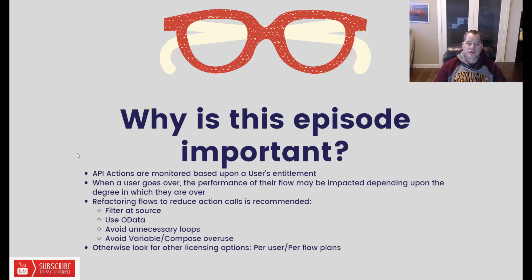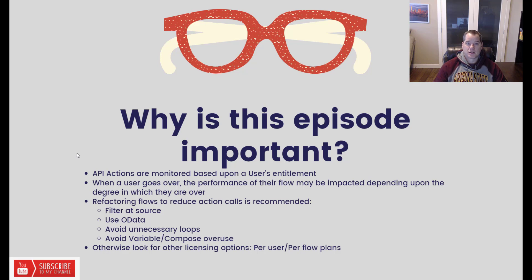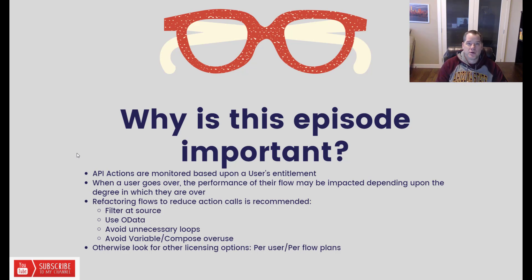The product group notes that when a user goes over their entitlement, the performance of their flow may be impacted depending on the degree. If you're just marginally over, you wouldn't expect much impact. But if you're dramatically over your entitlement, that's when you can expect performance to actually slow down.